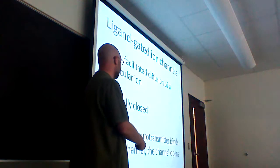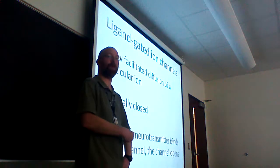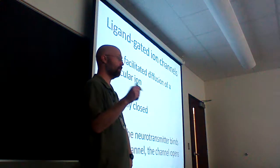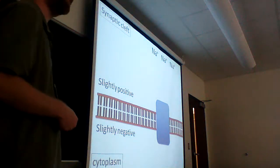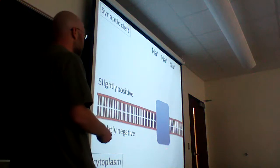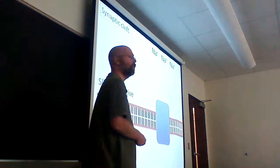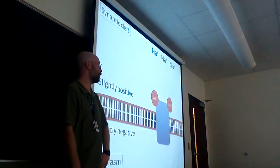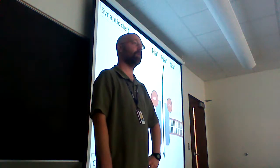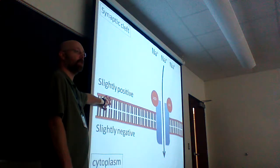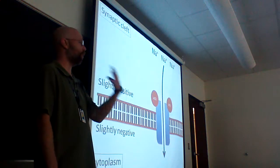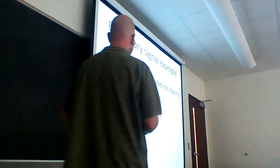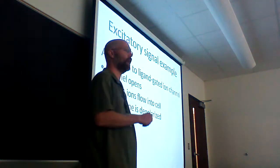A ligand-gated ion channel allows facilitated diffusion, usually of a very specific ion — normally closed, but in the presence of the neurotransmitter, the channel opens up. When the floodgates open, the ion moves from high concentration to low concentration. At resting membrane potential this channel is closed, but when we are awash in acetylcholine, it binds to the channel, the channel opens, and you get facilitated diffusion. Sodium flows in, the membrane depolarizes — gets closer to zero. If you depolarize the membrane enough, that will generate a subsequent action potential.